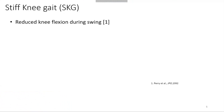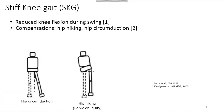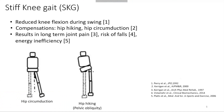Stiff knee gait is the most common gait disability following stroke and it is defined as the insufficient knee flexion during swing phase, which prevents the person from clearing their foot off the ground. As a result, people with stiff knee gait often develop compensations such as hip circumduction or hip hiking to increase their foot clearance. These compensations result in long-term joint pain, increased risk of falls, and make walking energy inefficient.